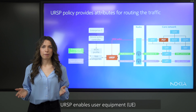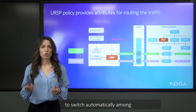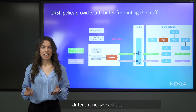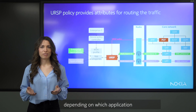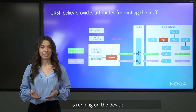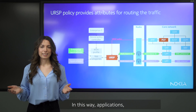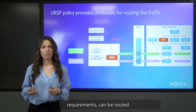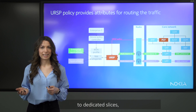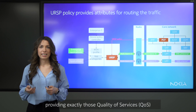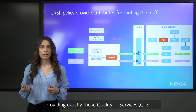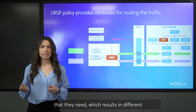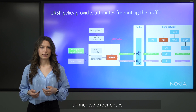URSP enables user equipment to switch automatically among different network slices depending on which application is running on the device. In this way, applications based on their specific requirements can be routed to dedicated slices, providing exactly those quality of services that they need, which results in different connected experiences.